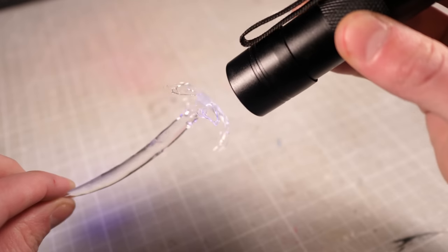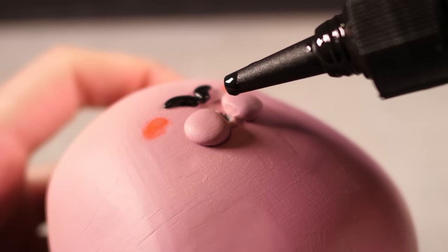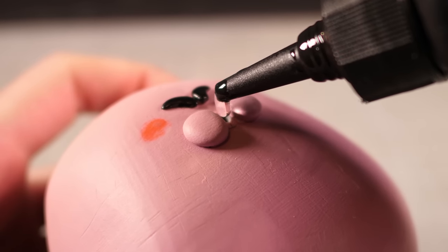Finally, I'll add some bigger droplets onto the end of the splashes to bulk them out. Then I'm ready to attach it to my water balloon, so I'll give Kirby a mouthful of resin, which will work as the glue to hold the water in place.